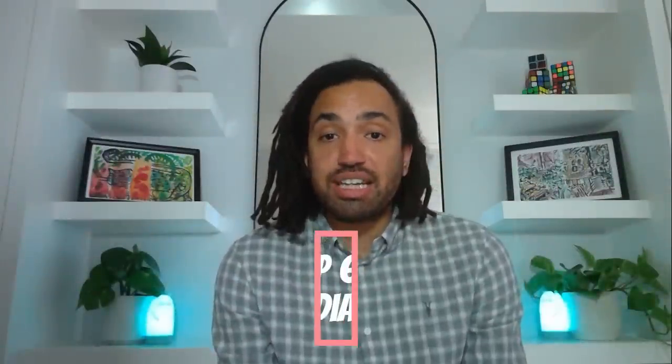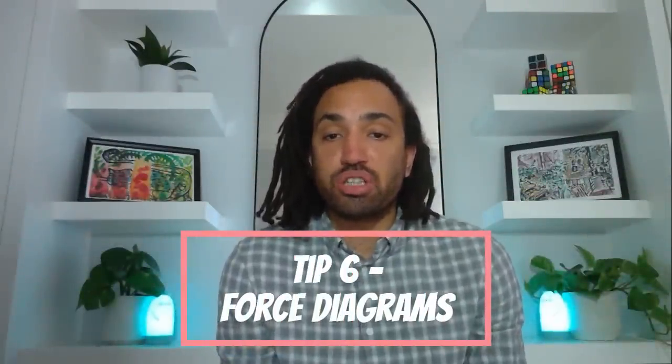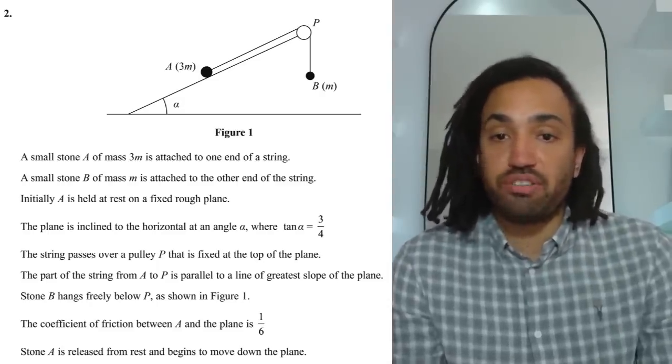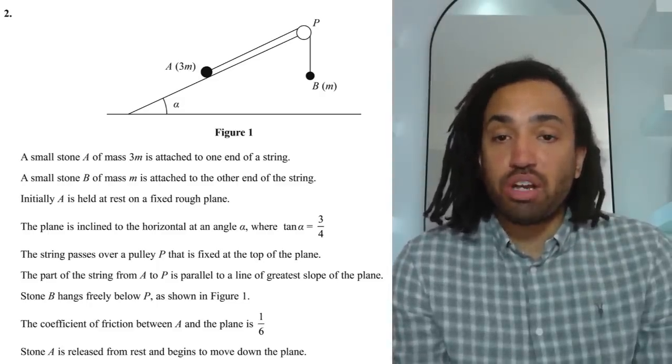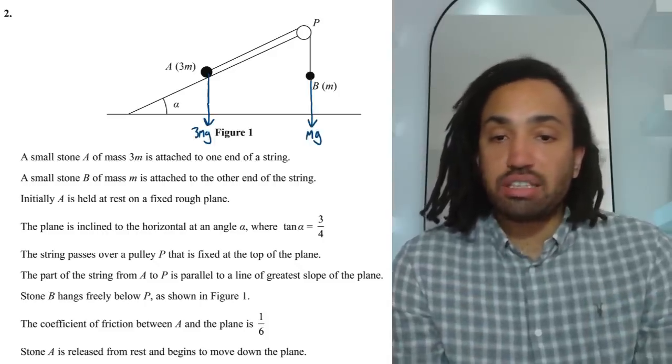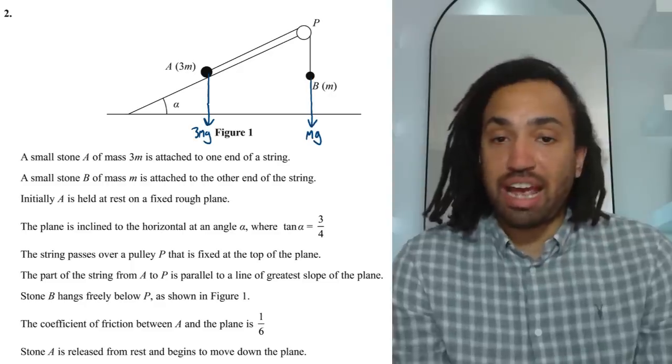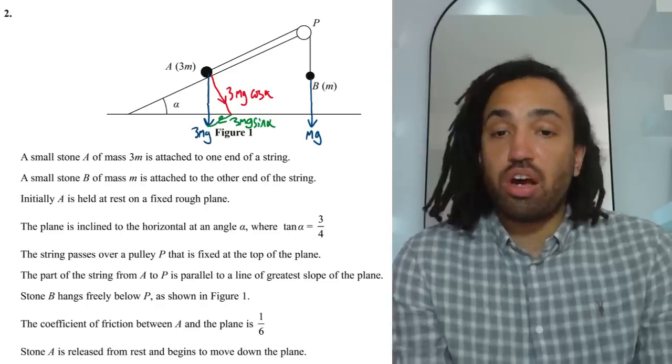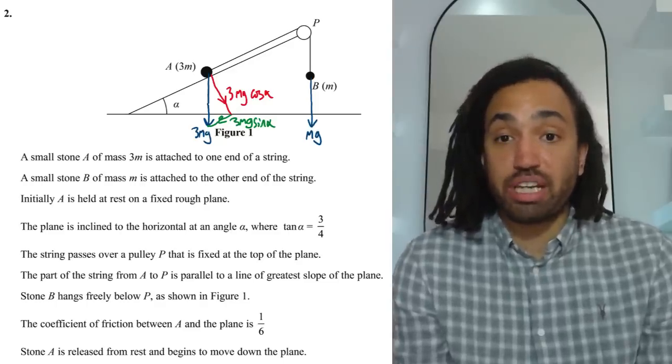Tip number six and that is draw a good force diagram. I always say if it's tricky draw a picky. Here's an example I'll need to label this diagram in order for me to answer the question effectively. I will start by looking at the two objects and drawing weight going directly downwards. Next I would notice that the object A is on a slope so therefore we could take components in parallel and perpendicular to the slope.